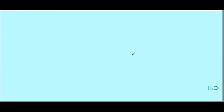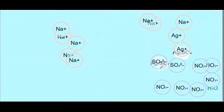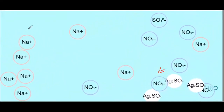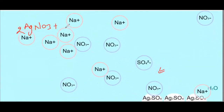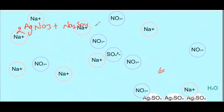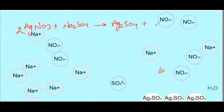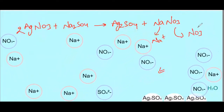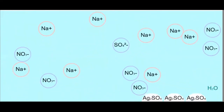Next reaction silver nitrate और sodium sulphate के बीच होगी। जब silver ion, sulphate के साथ react करेगा, तो silver sulphate का formation होगा — this is again a precipitation reaction। Reaction: AgNO3 + Na2SO4 → Ag2SO4 + NaNO3। Solution में sodium ion और nitrate ion present हैं।